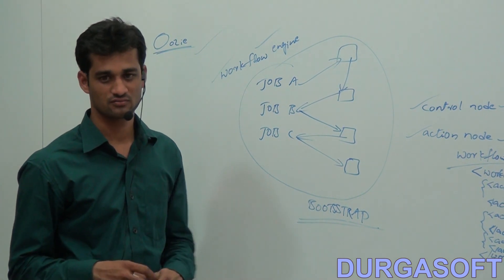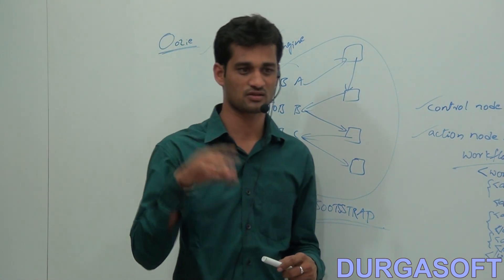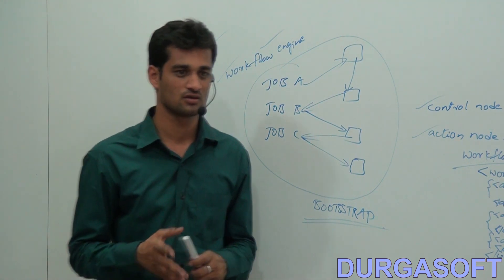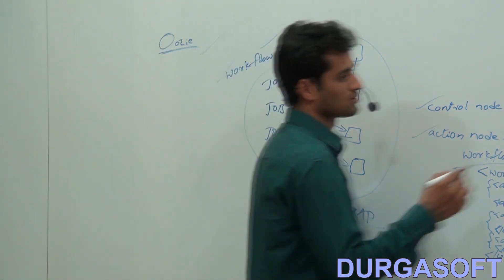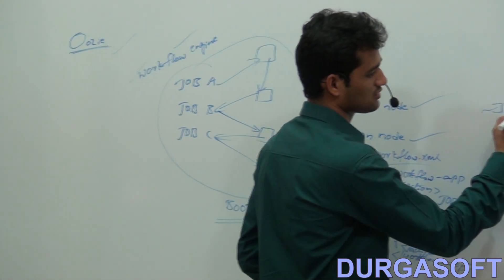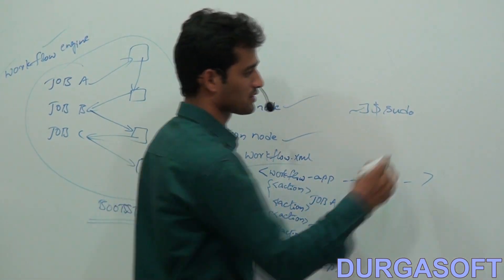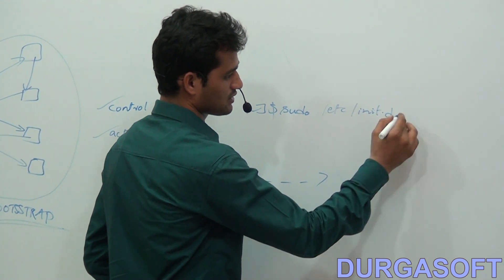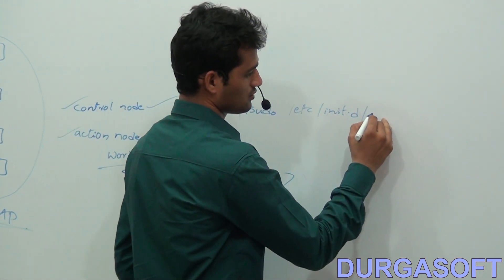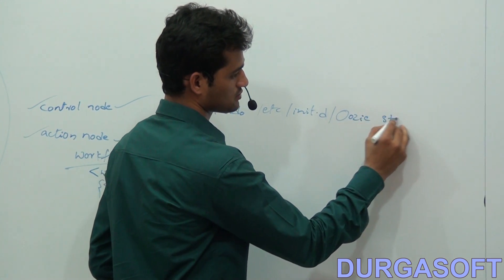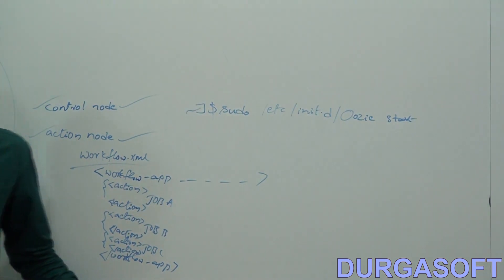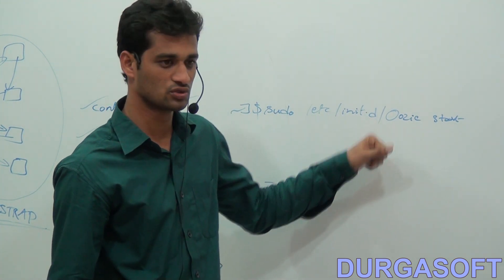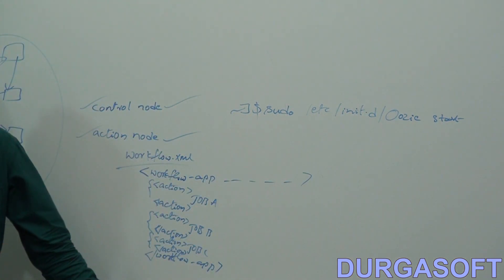To check how many services are running, you can give the command sudo jps. To start the Oozie service, give the command: sudo /etc/init.d/oozie start. That's it — it will start the Bootstrap service.